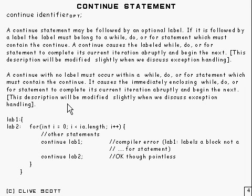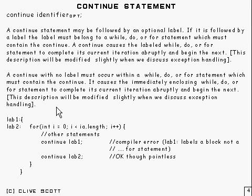If there is no label — because the label is optional — then the continue must occur within a while, do, or a for statement, just as before. It causes the immediately enclosing while, do, or for statement to complete its current iteration abruptly and to start the next iteration. Again, when we discuss exception handling we'll add a bit more to that.